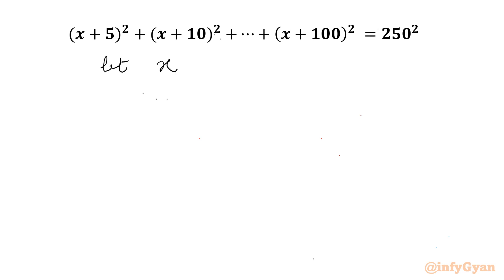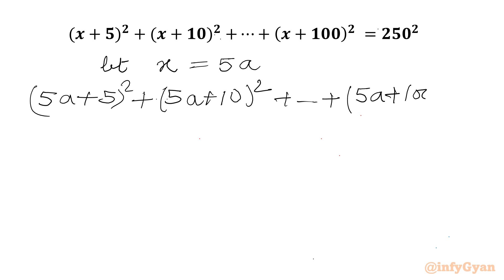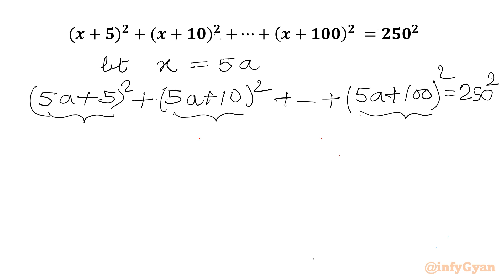I will let x = 5a. So our equation will become (5a+5)² + (5a+10)² + ... + (5a+100)² = 250². Now I will take 5 common from each of the brackets.